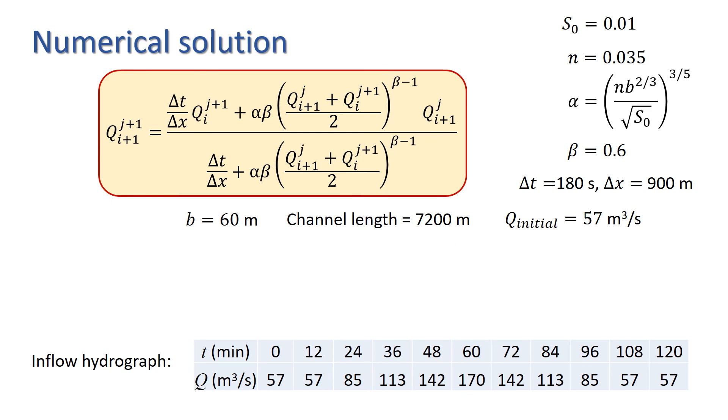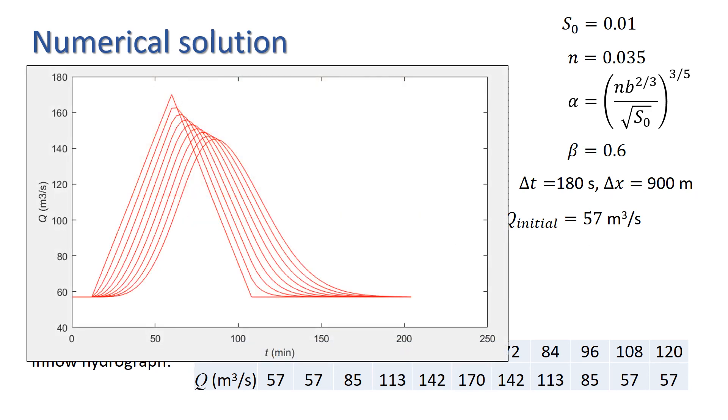Running this through our update equation, we get the following result. The triangular distribution on the left is the upstream discharge, i.e. the inflow hydrograph, and the distribution furthest to the right is the downstream discharge. The red distributions in between show how the discharge changes with time at points along the channel where there are grid points, i.e. every 900 metres.